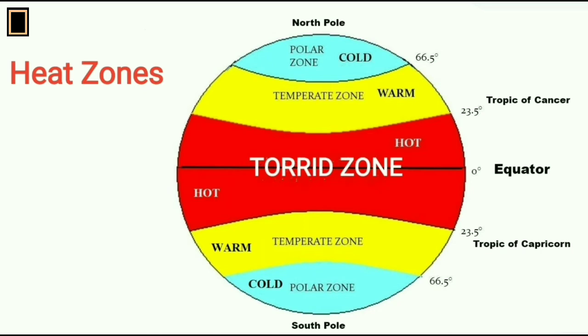Torrid zone: The region on either side of equator lying between the Tropic of Cancer and Tropic of Capricorn is known as torrid zone. Sunlight falls vertically throughout the year in this belt, and the earth's surface gets most heated up here.